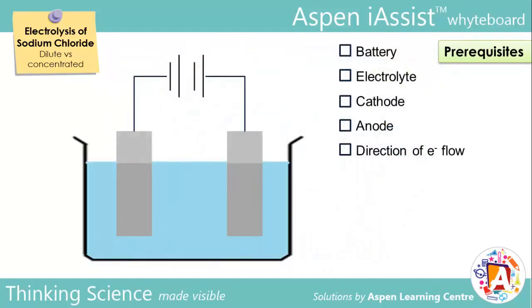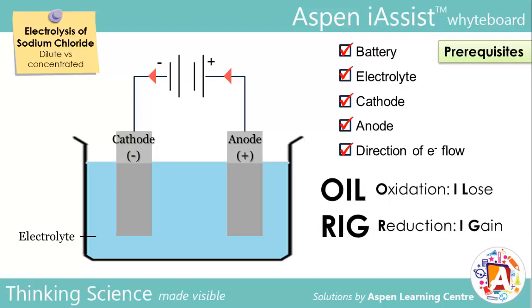Next, knowledge of the setup of an electrolytic cell is required. Make a check against the checklist to ensure that you are familiar with the setup. Finally, understanding of redox is very important to understand the reactions that go on in an electrolytic cell. Recall that in oxidation, electrons are lost, whilst in reduction electrons are gained. Also, realize that reduction always occurs at the cathode, while oxidation occurs at the anode.